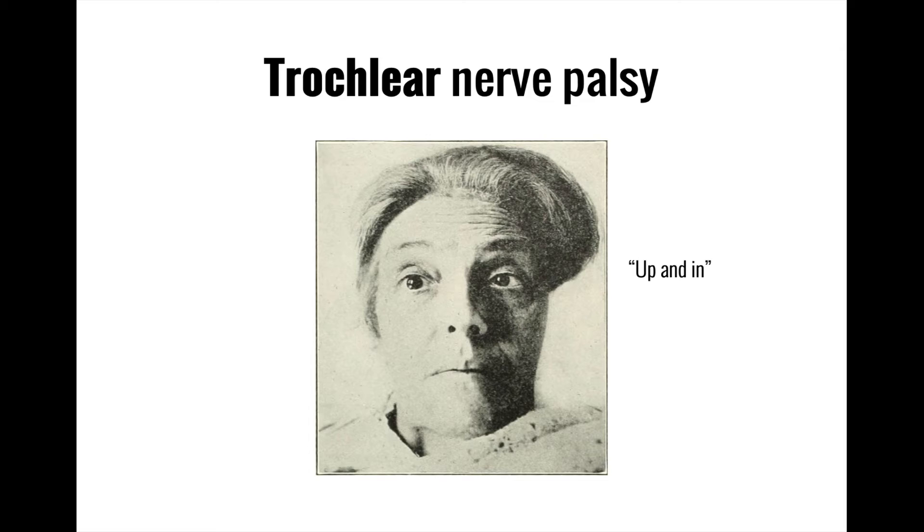Loss of the trochlear nerve leads to paralysis of the superior oblique muscle, which normally helps pull the eye downward at an angle. This leads to an up and in positioning of the eye when asked to look inward. This may cause someone with a trochlear nerve palsy to develop a compensatory head tilt as a way of using their entire head to offset the upward drift of the eye.